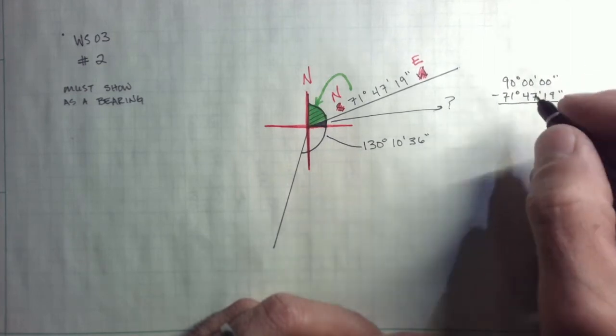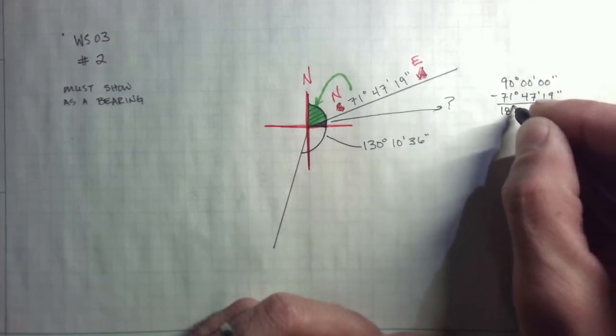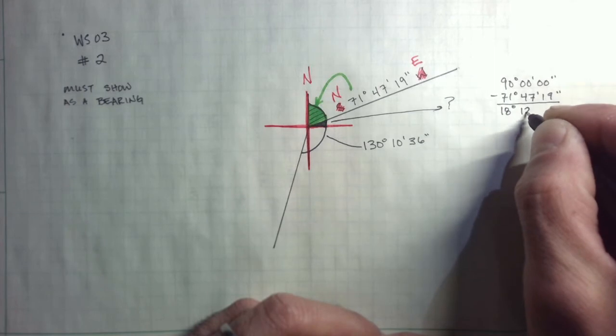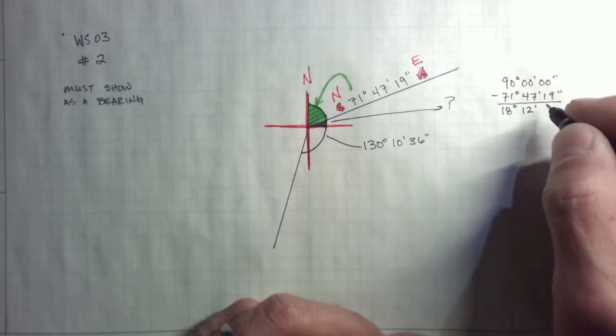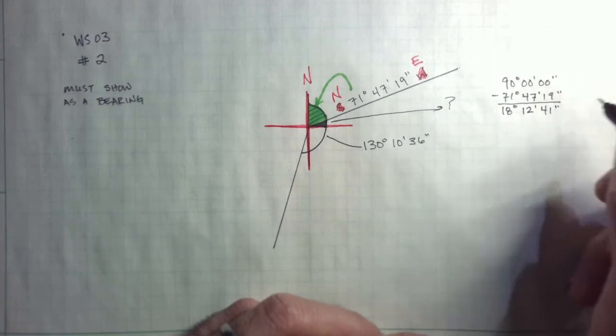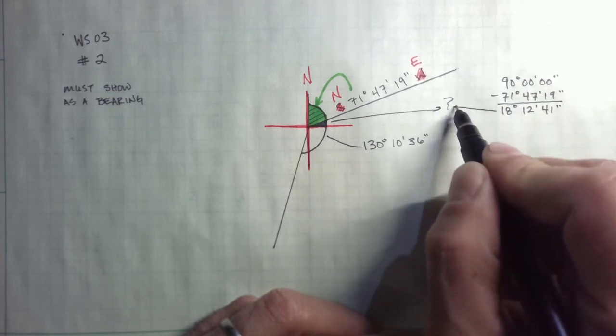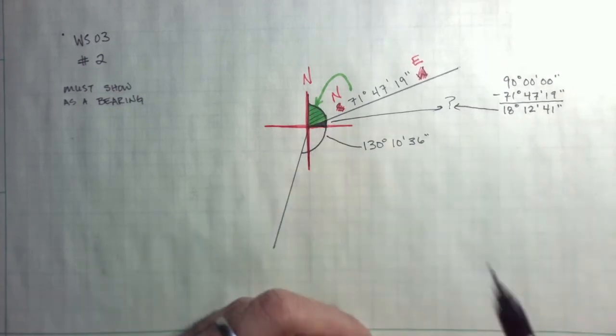And if I do that subtraction, I should get 18 minutes, I'm sorry, 18 degrees, 12 minutes, 41 seconds. So that is this angle here.